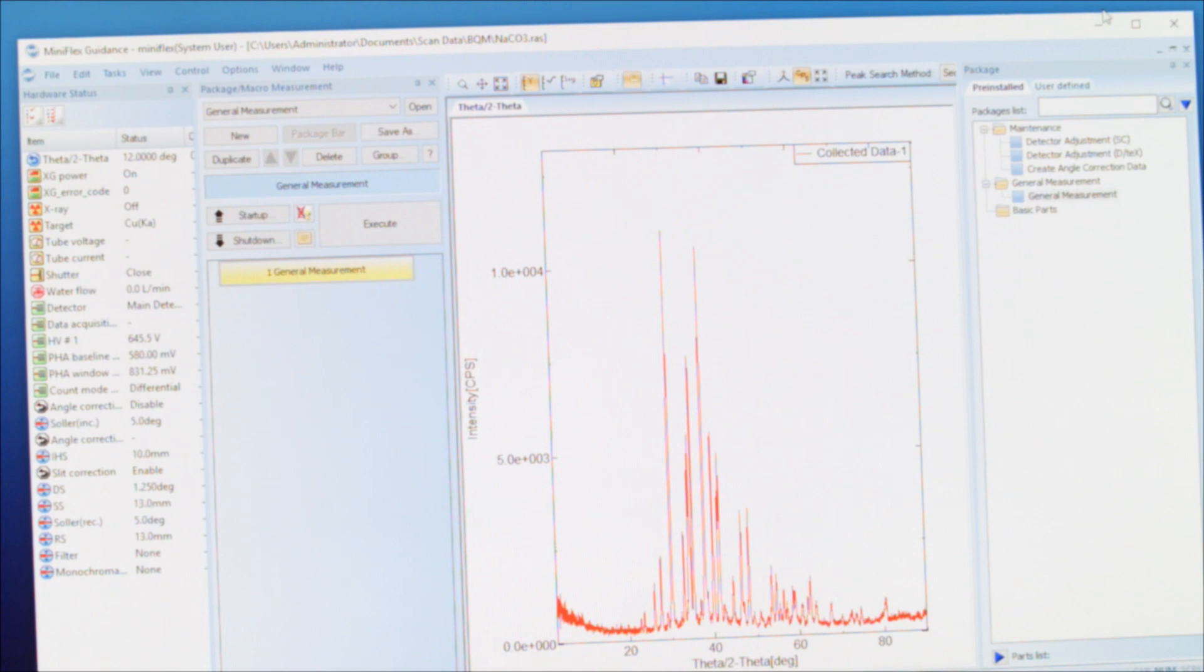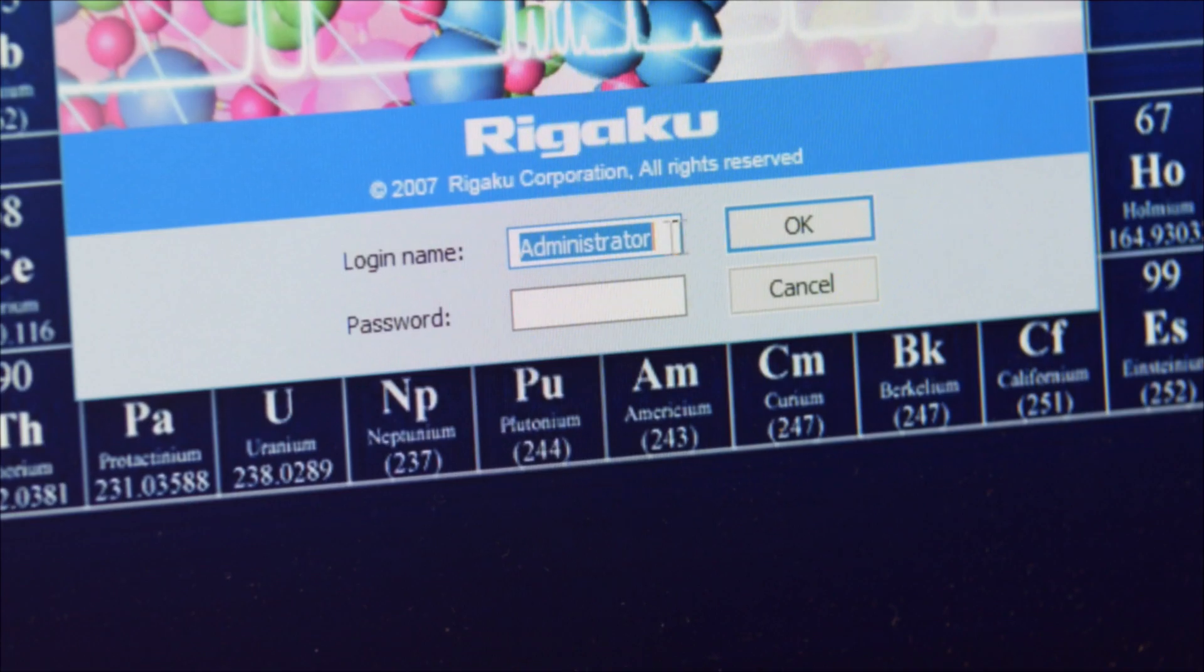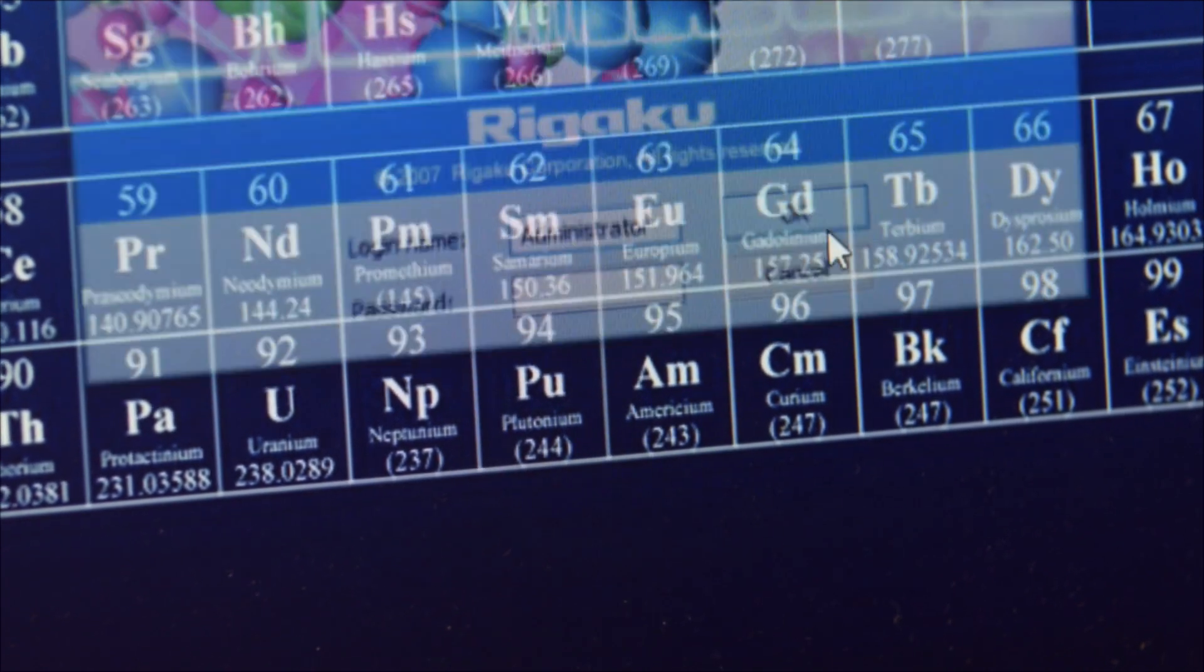The MiniFlex guidance software automatically saves the data, but if you'd like to export your data into a text format that's readable by other programs, open the PDXL2 software on the desktop. The login name should be administrator and there's no password. Click OK.